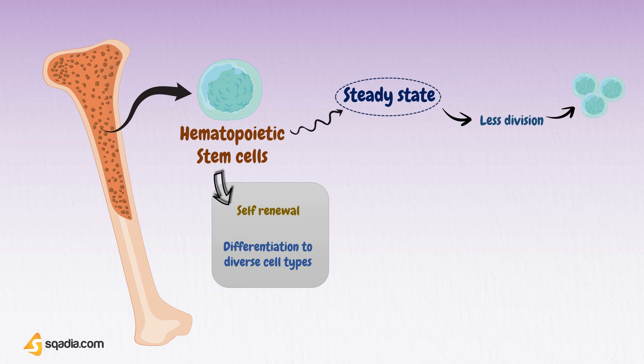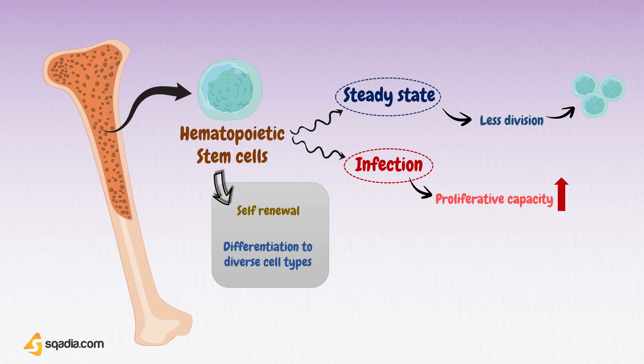On the other hand, when there is an increased demand for hematopoiesis — for example, during an infection or after chemotherapy — HSCs display an enormous proliferative capacity.